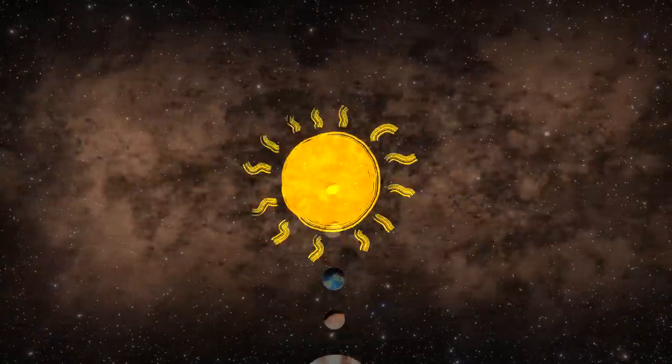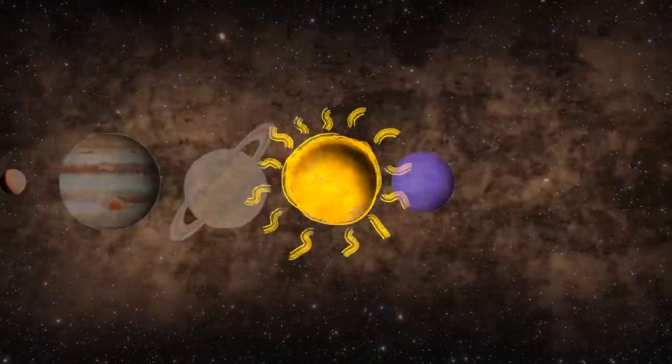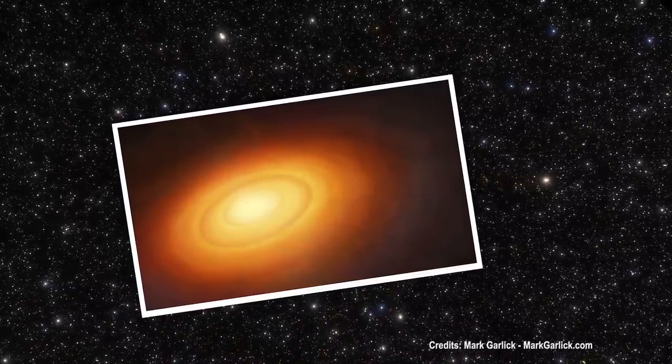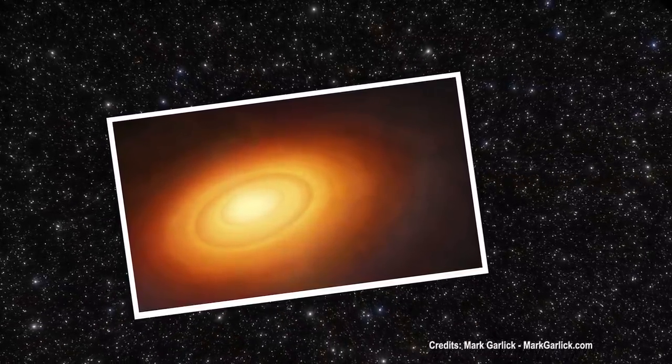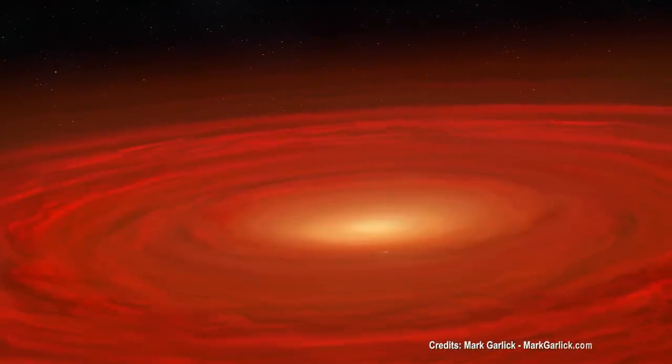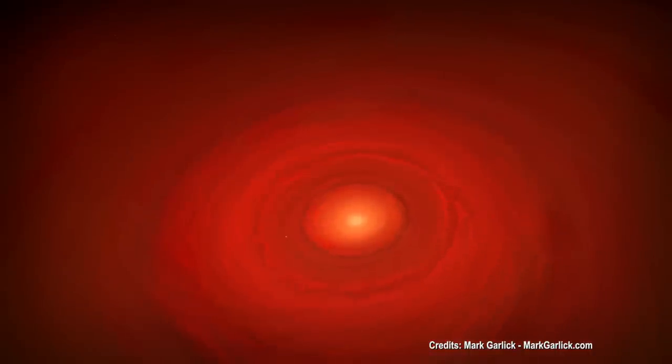The birth of the solar system was a magnificent event that unfolded 4.6 billion years ago. Picture it: massive swirling clouds of gas and dust colliding and merging to create what scientists call a solar nebula. This nebula began to spin faster and faster, eventually flattening into a magnificent disk.